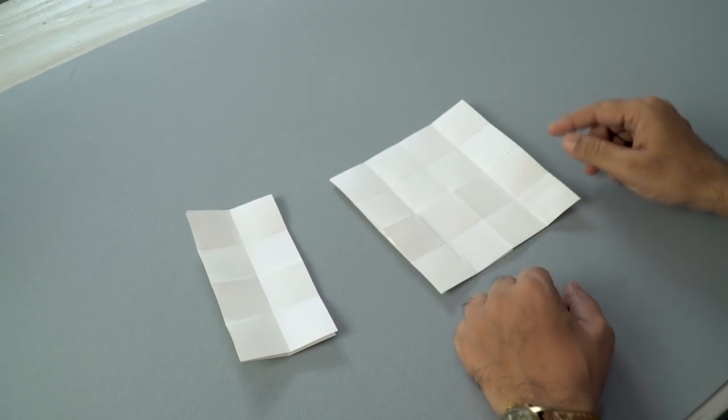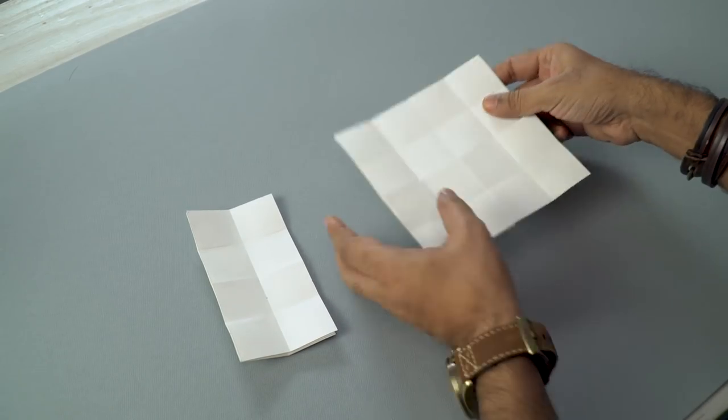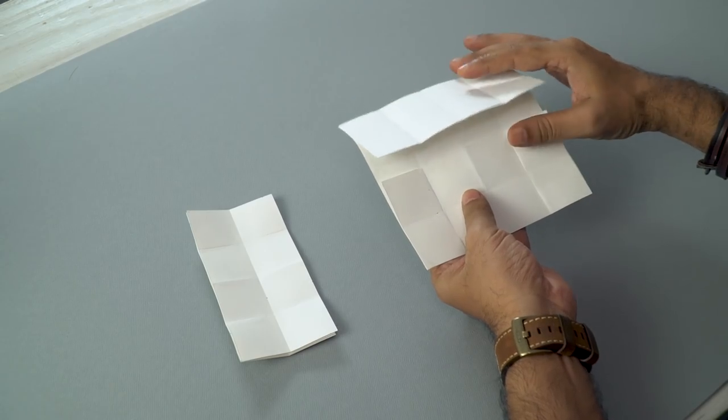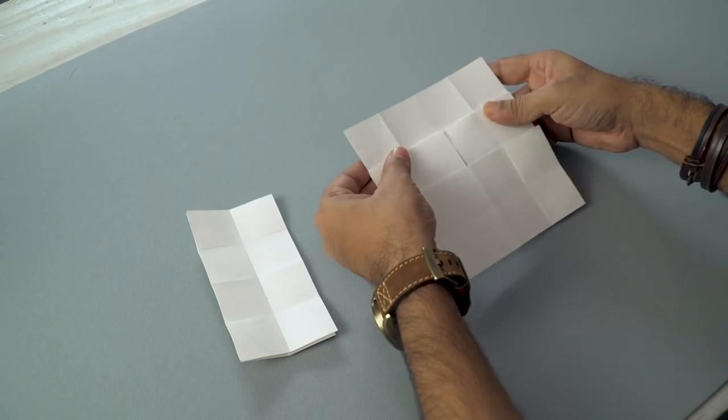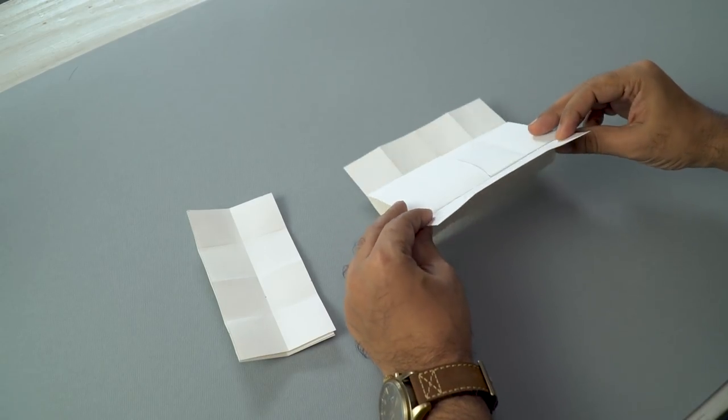So we are done with our first layer. Now what we need to do is, along this horizontal cut, we will open it like this. Flip it, fold it and press it down. Form a nice crease. And do the same thing for the bottom flap.